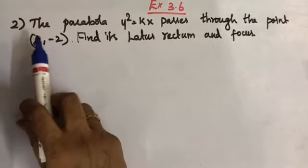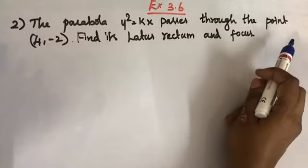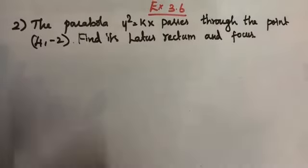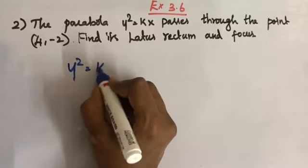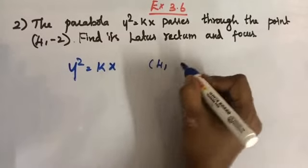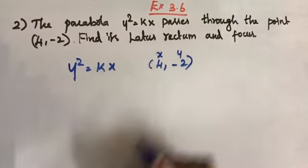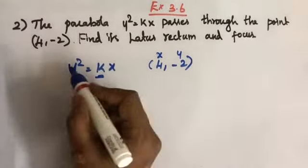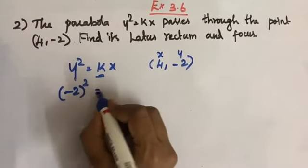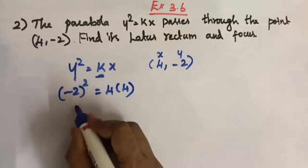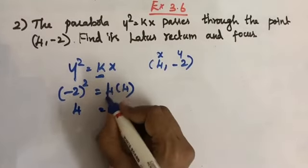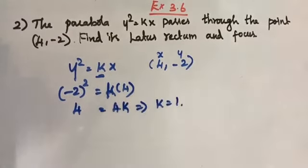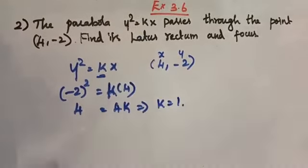Second question: The parabola y² = kx passes through the point (4, −2). Find its latus rectum and focus. Substituting the point: (−2)² = k × 4, so 4 = 4k, which gives k = 1. Therefore the equation is y² = x.